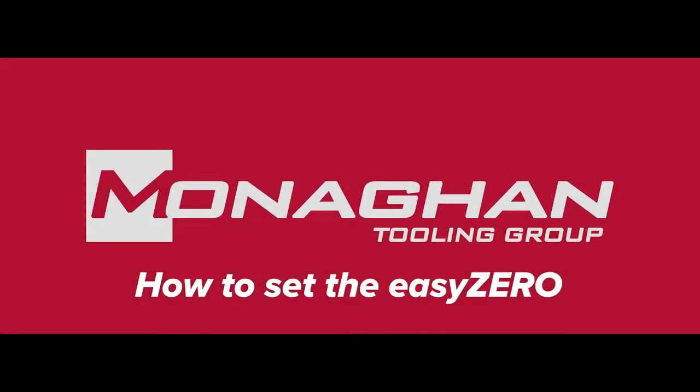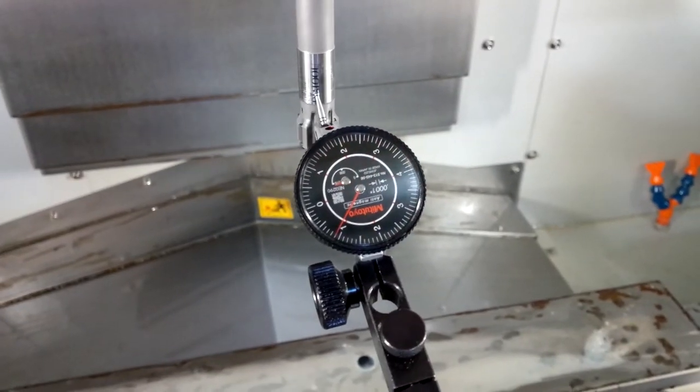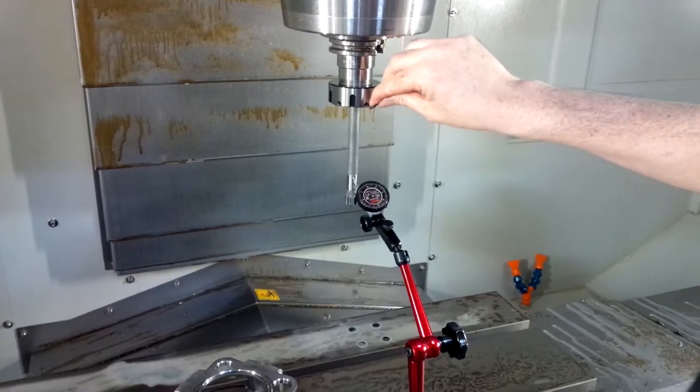Setting the Easy Zero Nut. Place an assembled tool into the spindle and check for run out. In this case, we have almost a thou and a half of run out.